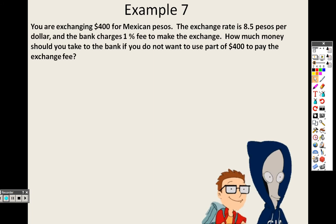In example 7, you are exchanging $400 for Mexican pesos. The exchange rate is 8.5 pesos per dollar. And the bank charges a 1% fee to make the exchange. How much money should you take to the bank if you do not want to use part of your 400 to pay for the exchange fee?